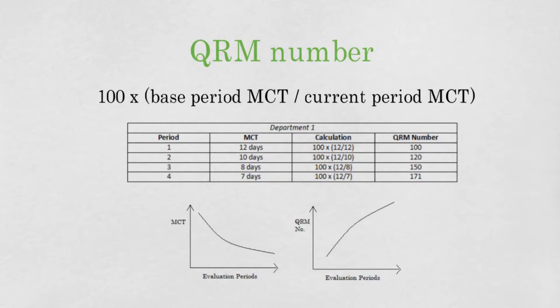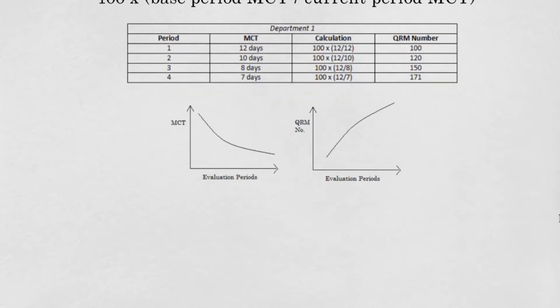The use of this QRM number has four advantages. First, as I just said, reducing MCT results in an increasing QRM number. In the science of performance measurement, it is well known that people react more positively to graphs going up than to graphs going down.